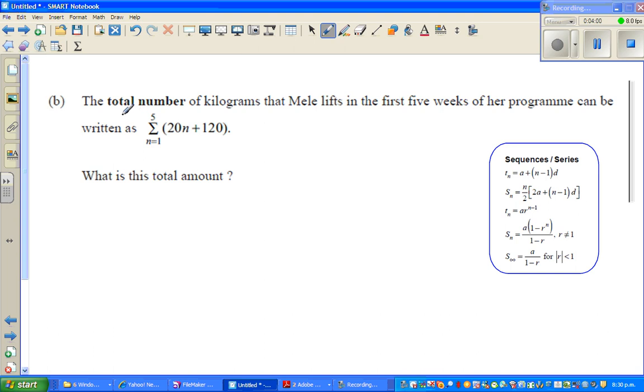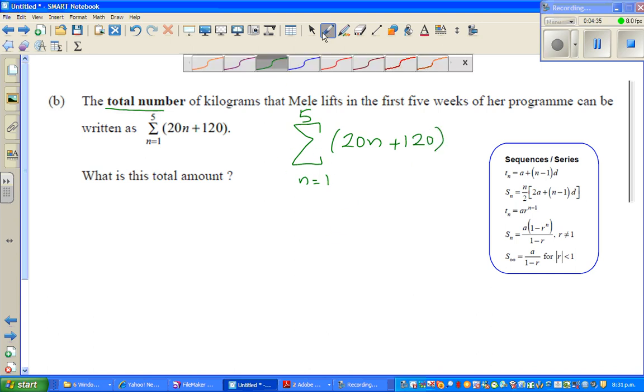Let's move on. The total number of kilograms that Mele lifts during the first five weeks of her program can be written by this sigma notation. This is sigma. I'll write this bigger. How do you read this? This is n from 1 to 5. This is how you read sigma, where n runs from 1 to 5 of this formula: 20n plus 120. Basically, sigma stands for summation or addition. Wherever you have this Greek letter sigma, that stands for summation—you have to add something.